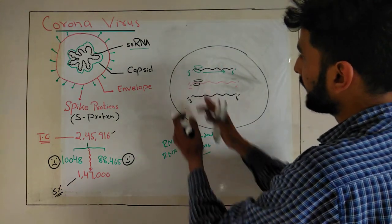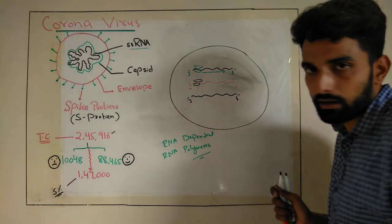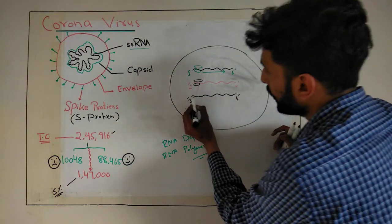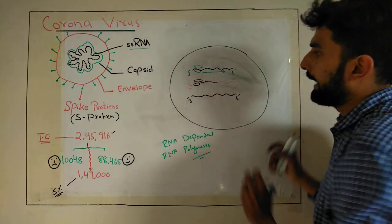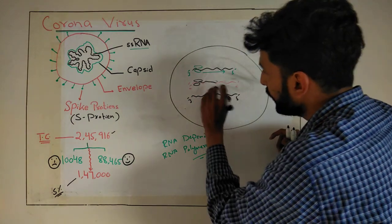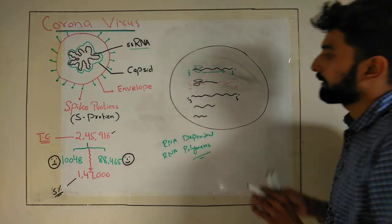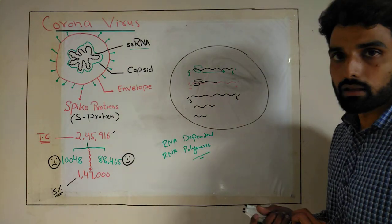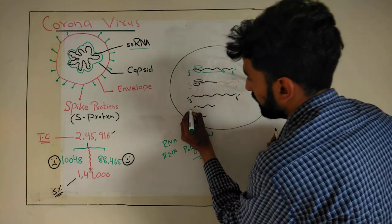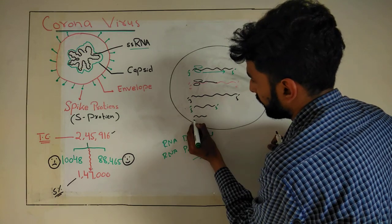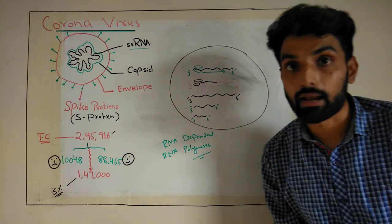RNA-dependent RNA polymerase has one important property: it can stop anywhere. It is not necessarily going to keep moving till the terminal end. For example, it may move until a certain point and then stop further replication. So some very small RNA fragments will also be formed, either 5' to 3' or 3' to 5' direction. We now have a number of copies of viral RNAs in our host cell.